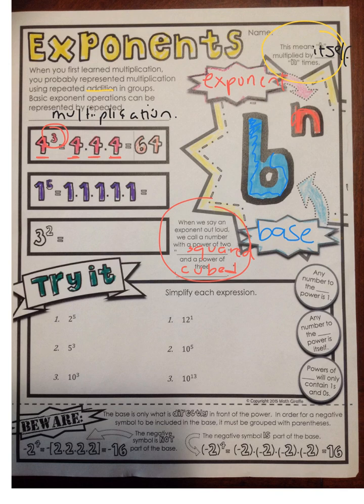In the next one here, we have 1 to the fifth power. So this 1 is the base, the 5 is the exponent. This 5 tells you to multiply the base 1 by itself 5 times. And 1 times 1 times 1 times 1 times 1 is 1.